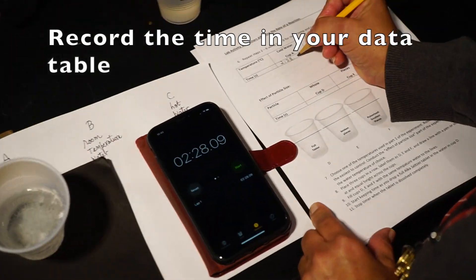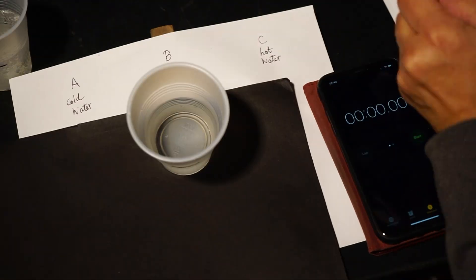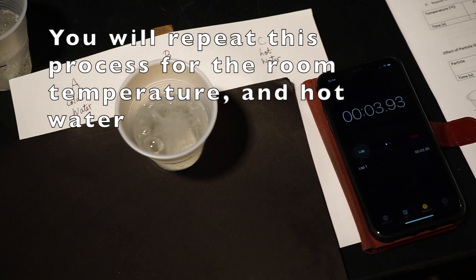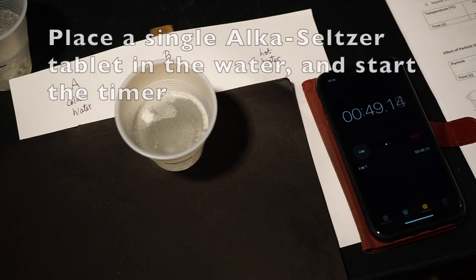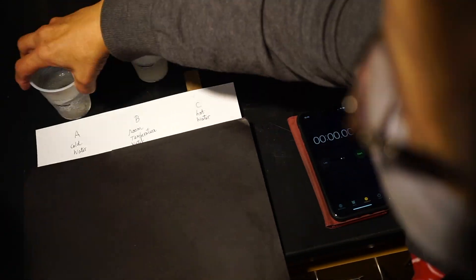Record this time in your data table. You will repeat the same process for the room temperature and the hot water. Place a single Alka-Seltzer tablet into the cup, start the timer at the same time, and then wait for it to completely dissolve.